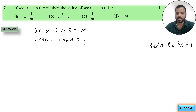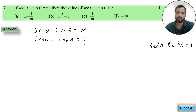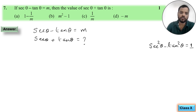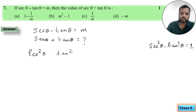तो हमको यहां देखना है sec²θ minus tan²θ equals 1. और हमें sec minus tan theta दिया हुआ है और sec plus tan theta पूछा हुआ है। हमको मालूम है a² minus b² में a plus b into a minus b आता है — तो हम वही यूज़ करेंगे, easy हो गया।